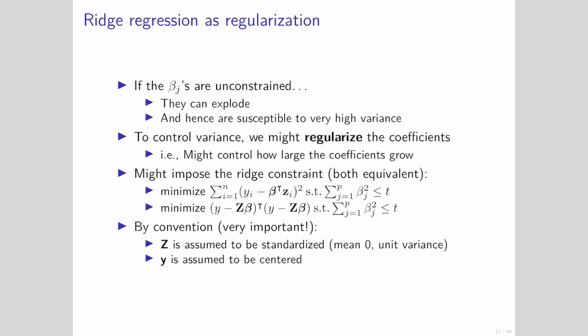So one form of bias we might introduce is to make sure our parameters are in a reasonable range. To do that, we're going to regularize our coefficients. Regularization is equivalent to introducing some bias in order to give us a model with better properties. The form we're going to introduce today is ridge regularization.